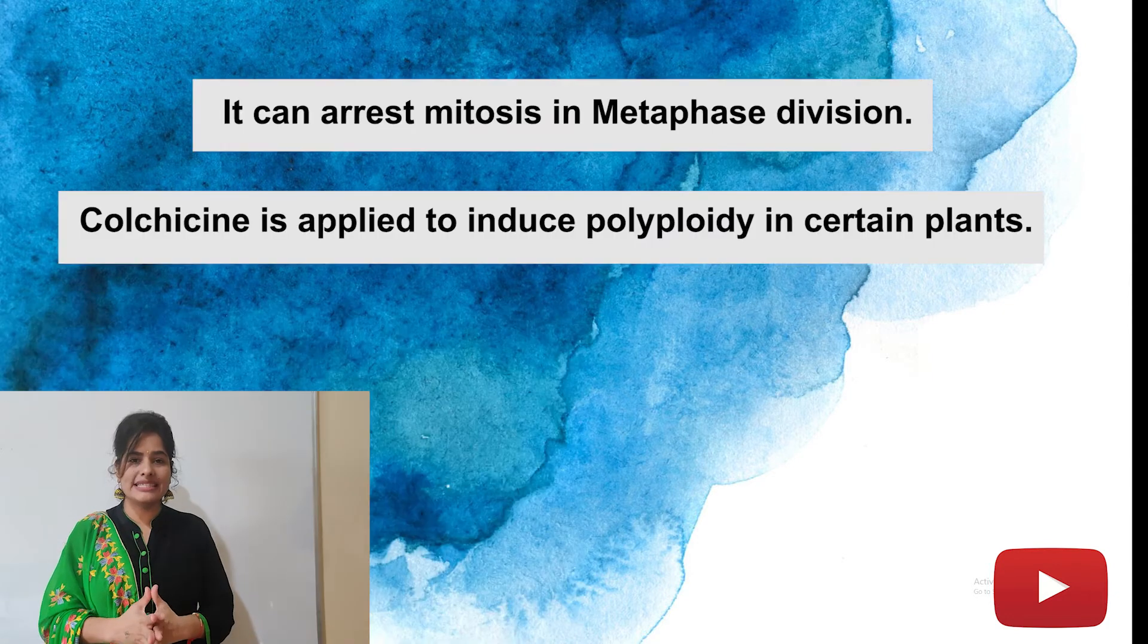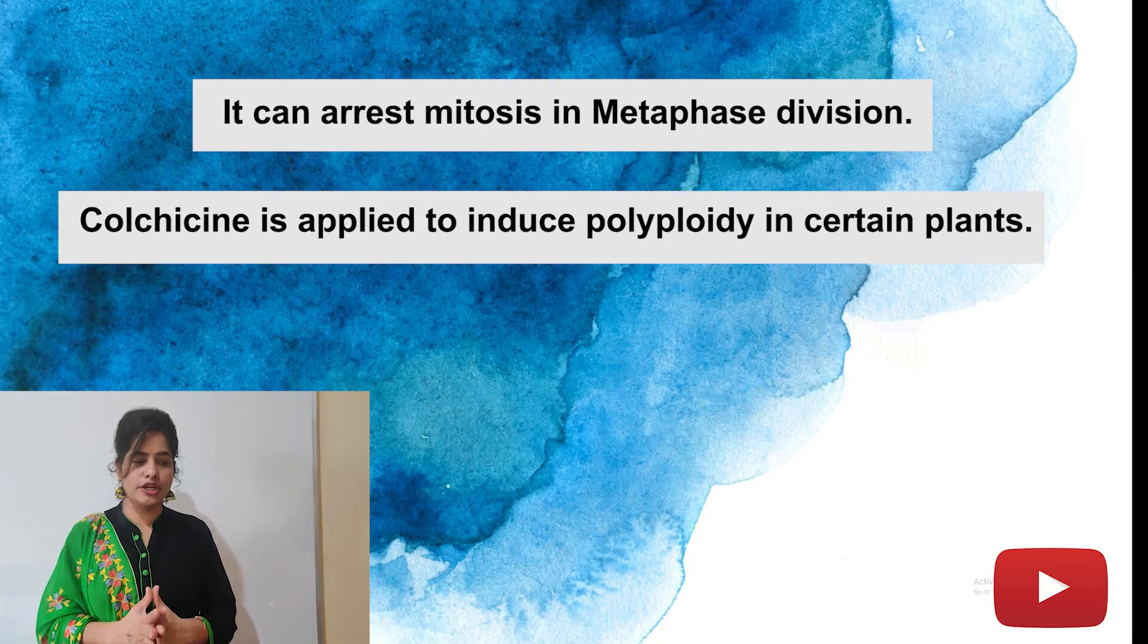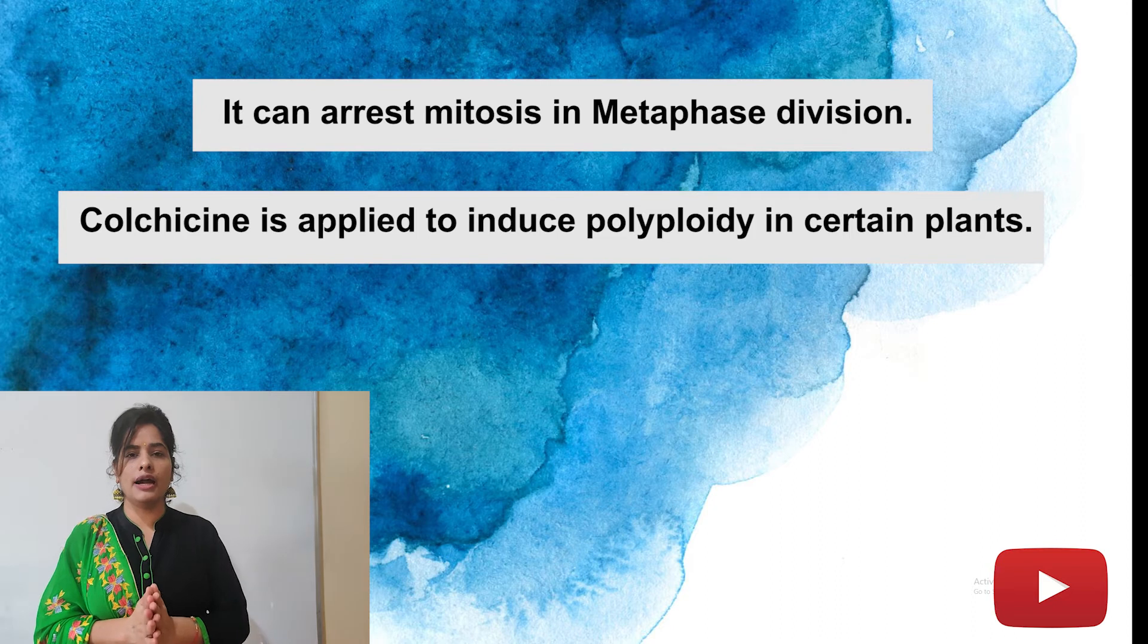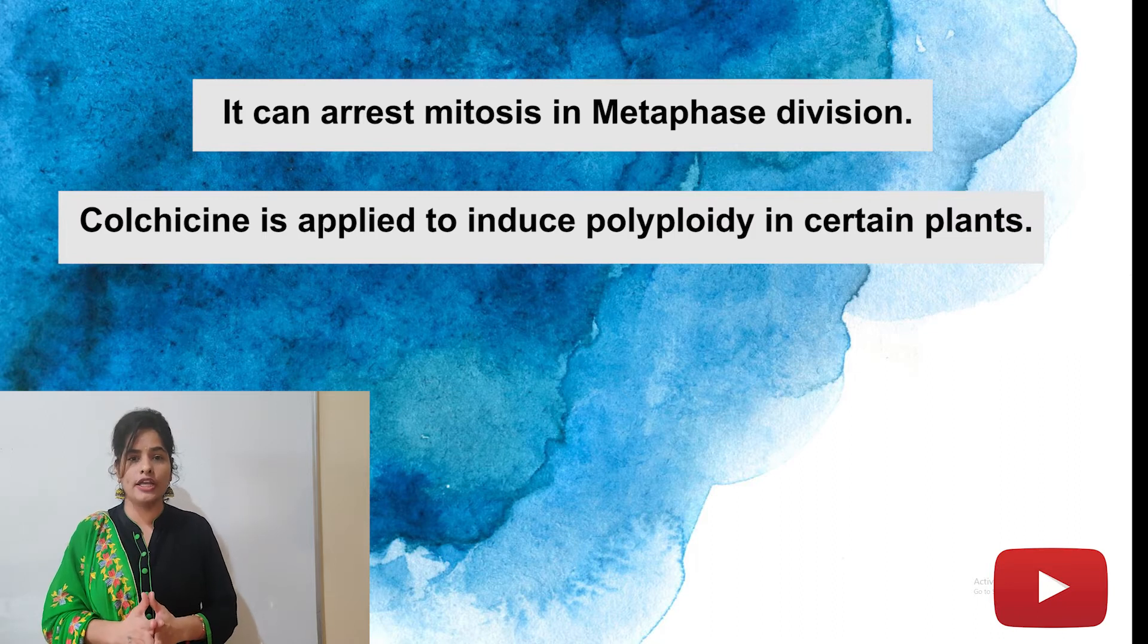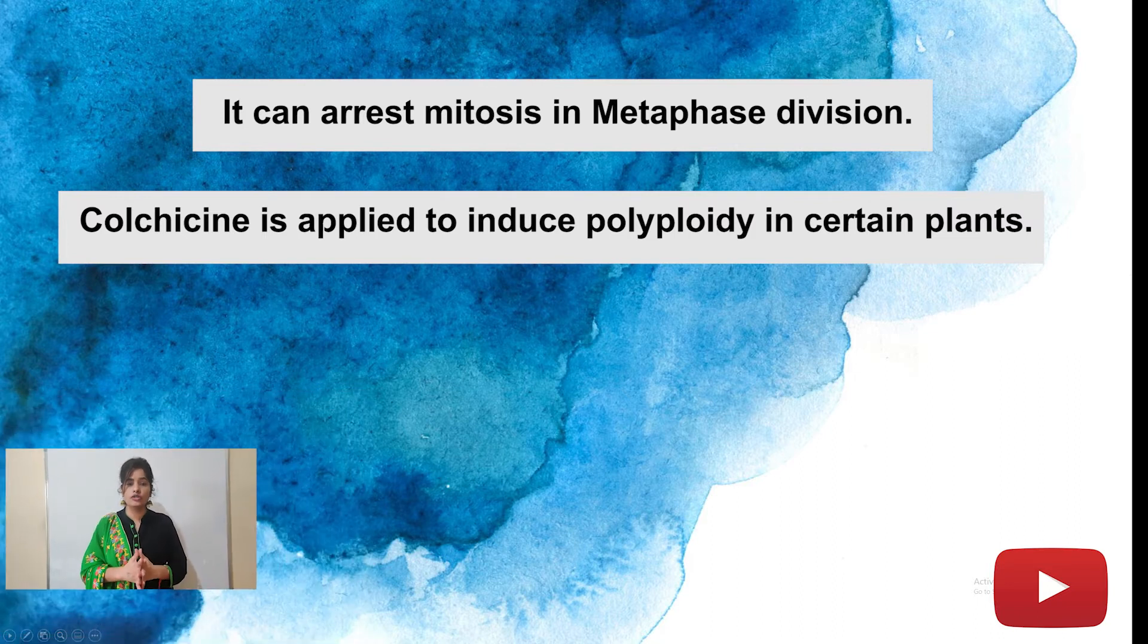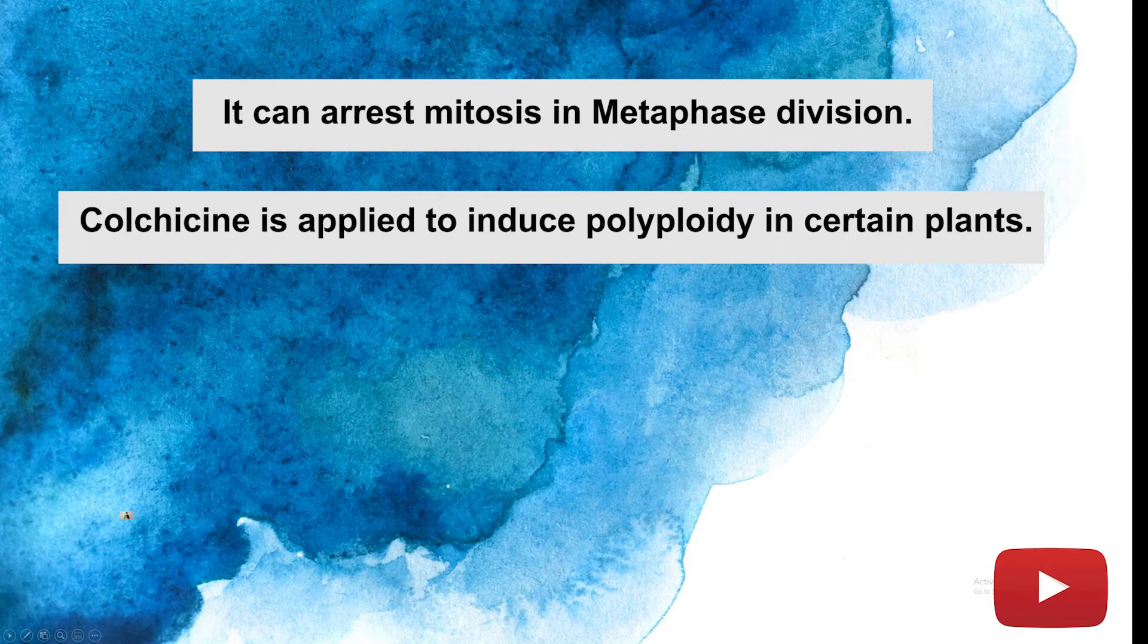Why we are using colchicine to stop mitotic division? Because colchicine is applied to induce polyploidy in certain plants. Hum colchicine ka use kyo karte hai? Ta ki kishi bhi cell mein polyploidy situation form ho sakhe. Polyploidy situation means more than two chromosome present ho.